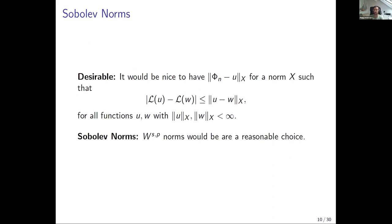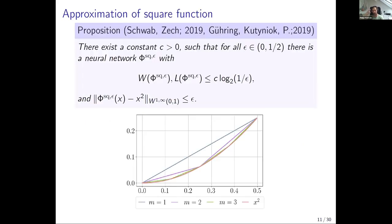We want something stronger: a sequence of networks phi_n that converge to u in a norm that is sufficiently strong — strong enough that if I have convergence there, then the energies also converge. We did a first step in this direction, looking at W^{s,p} Sobolev norm convergence. The basic idea of all the approximation results is that you first approximate the square function. There's a construction by Yarotsky that gives an approximation of the square function by a neural network with error epsilon, and both weights and number of layers grow only like a logarithm. This extends to the W^{s,∞} norm.